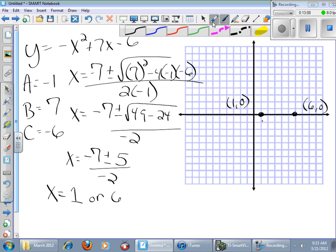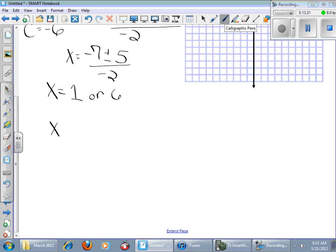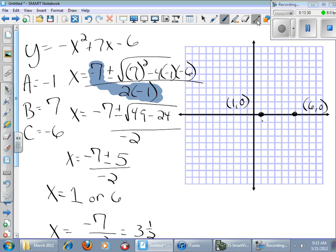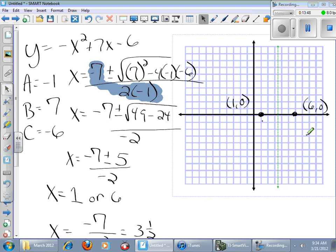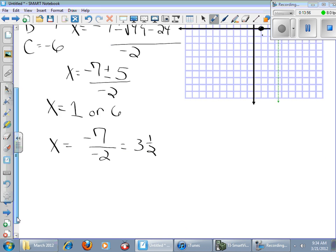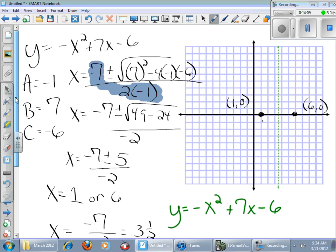I will use this part of my formula here to get my vertex. The x coordinate of my vertex is going to be x equals negative 7 over negative 2, which is 3 and a half. So I'm going to show my vertex at 3 and a half. To find the y coordinate of the vertex, I'm going to plug in 3 and a half. The equation was y equals negative x squared plus 7x minus 6.